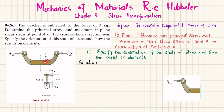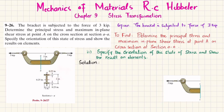You can see this is the bracket subjected to a 3-kip tensile load. The cross section at section A is shown here. You can see the breadth, the height, the web flange, and the web. All the dimensions are mentioned. You have to find the principal stresses and maximum in-plane shear stress at point A and specify the orientation and state of stress.